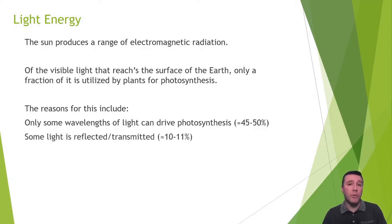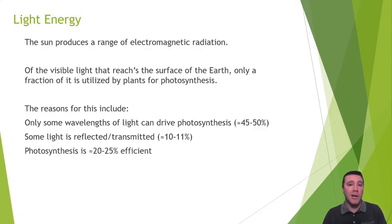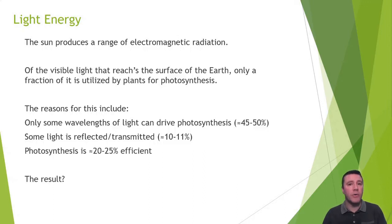Second, even some of those useful wavelengths of light are reflected by the plant or simply pass right through the leaves, missing the photosystems in the thylakoids that trigger the reactions of photosynthesis. And finally, biochemical processes are not 100% efficient, and photosynthesis is no exception. So what's the result? 20–25% of 10–11% of 40–50% is about 1%. Only about 1% of the sun's visible light that reaches the Earth's surface ends up being used to drive photosynthesis.